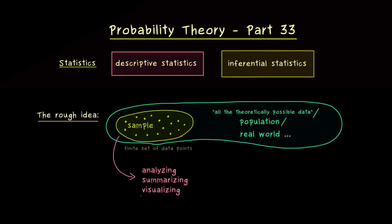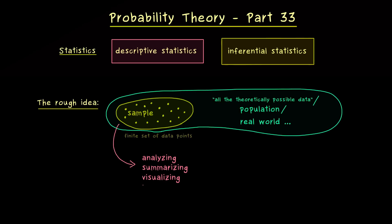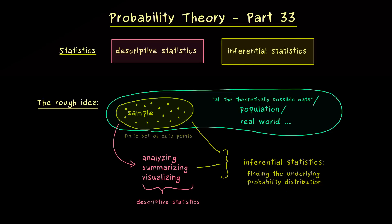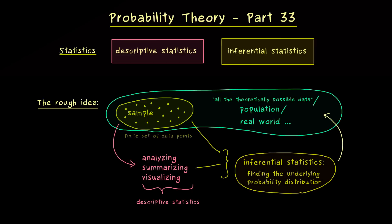And there statistics comes into the game, because now we can analyze our given sample. Moreover, summarizing and visualizing all the data we have is usually what we put into the descriptive statistics. This is quite important and it's something the inferential statistics can use as well. For example, the inferential statistics tries to find the underlying probability distribution, and this leads to a prediction for the whole population.